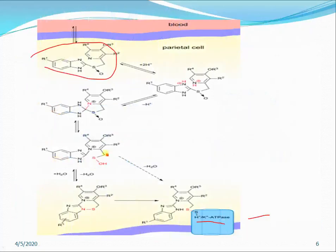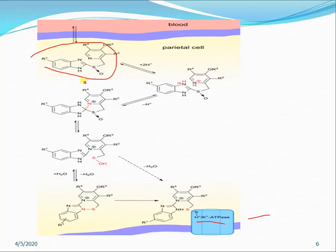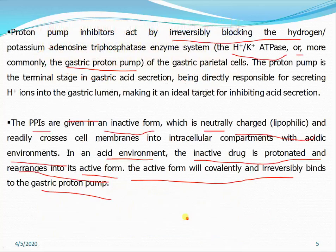In the activation pathway, an intramolecular transfer of a proton occurs prior to the nucleophilic attack. Electron donors such as methoxy groups on the pyridine ring enhance the rate of attack at C2, promoting formation of the active species called sulfenamide. This sulfenamide is covalently and irreversibly bonded to the gastric proton pump.